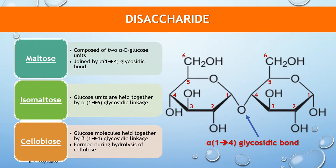The formation of the glycosidic linkage is shown in the diagram of maltose: the first carbon atom of the first alpha-D glucose forms a bond with the fourth carbon of another unit of alpha-D glucose, and hence it is named alpha-1,4 glycosidic linkage.